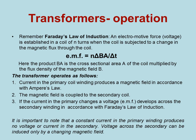The transformer operates as follows. Current in the primary coil winding produces a magnetic field in accordance with Ampere's law. The magnetic field is coupled to the secondary coil. If the current in the primary changes, a voltage develops across the secondary winding in accordance with Faraday's law. It's important to note that a constant current in the primary winding produces no voltage or current in the secondary. Voltage across the secondary can be induced only by a changing magnetic field.